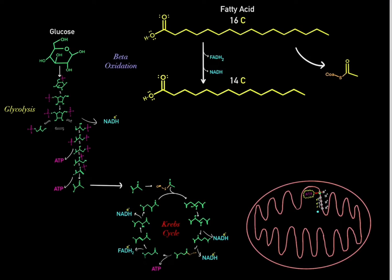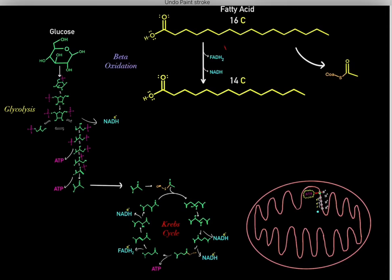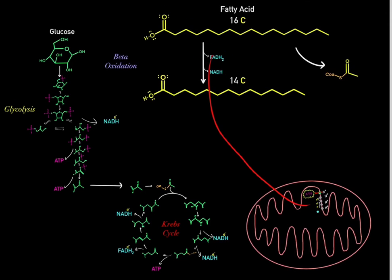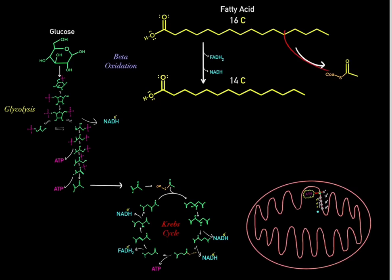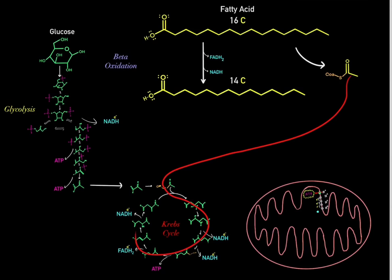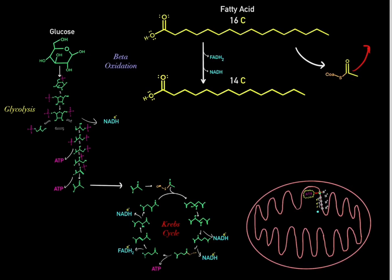We can take these reduced cofactors to fuel the electron transport chain to directly create ATP. Free fatty acids thus directly produce reduced cofactors to fuel the electron transport chain. We also create acetyl-CoA molecules, which can theoretically enter the Krebs cycle, though in the context of beta-oxidation these acetyl-CoA molecules are typically used for ketogenesis.